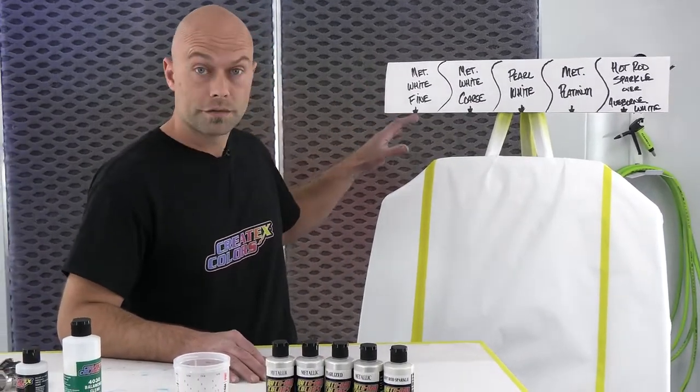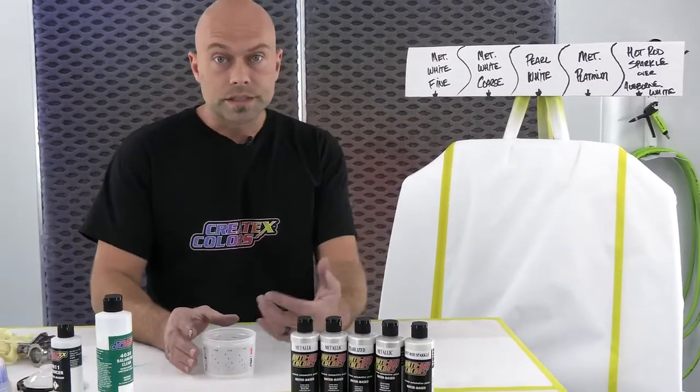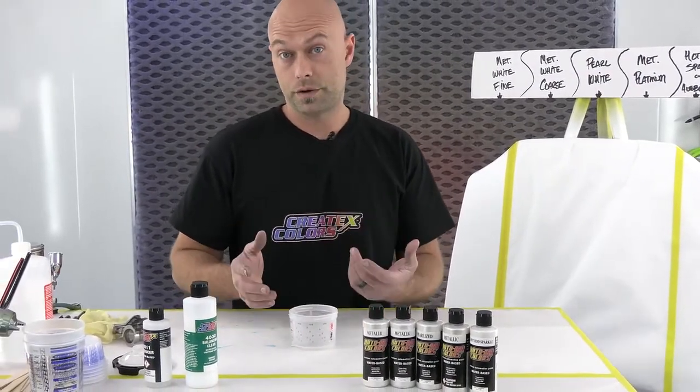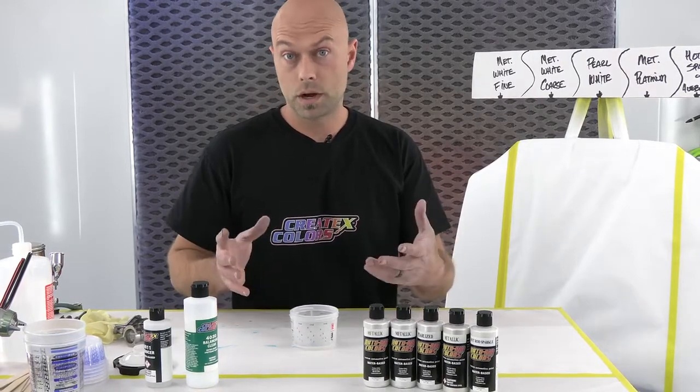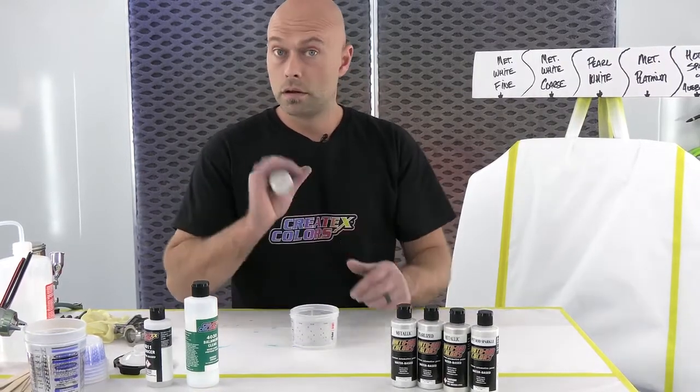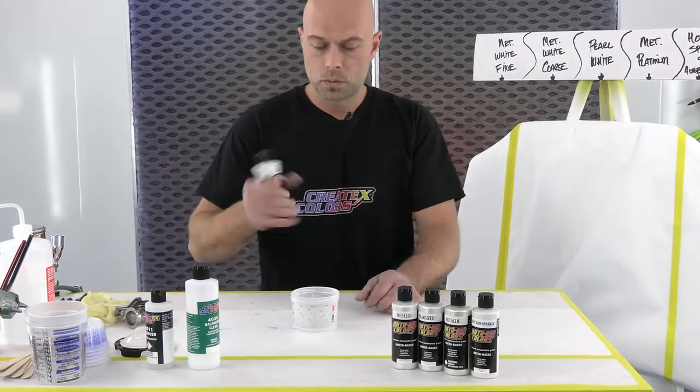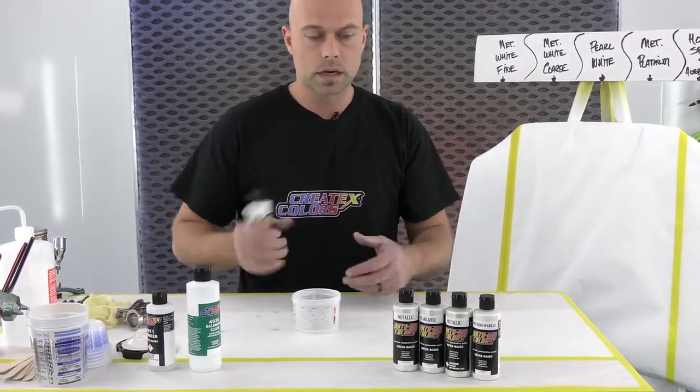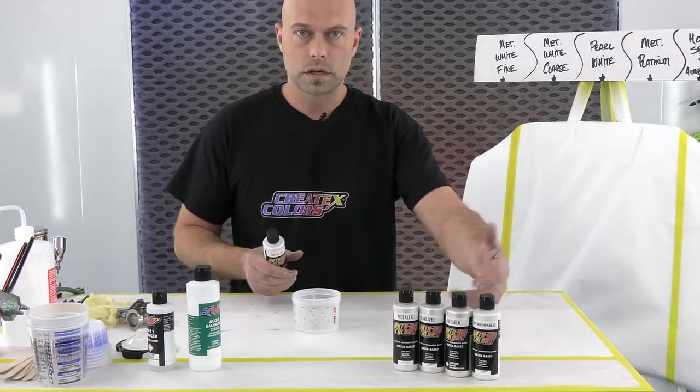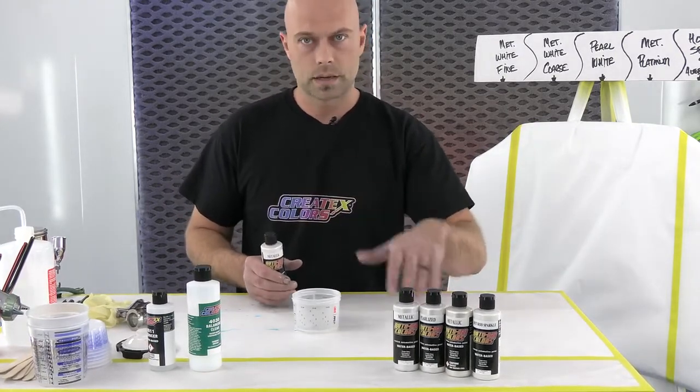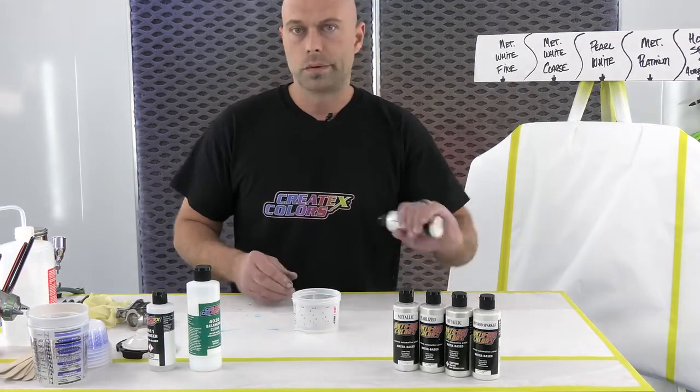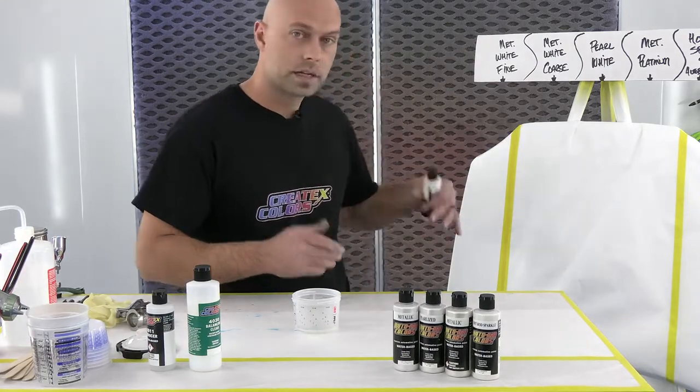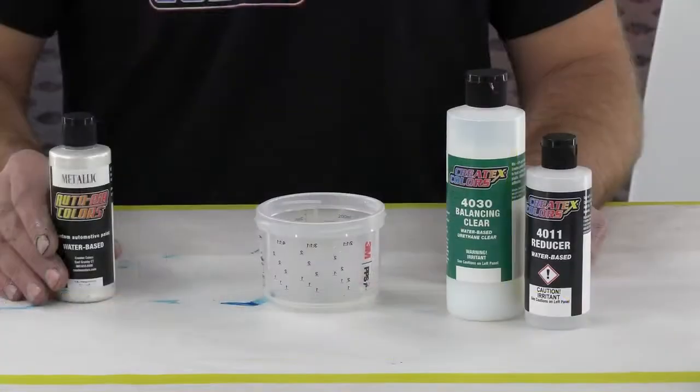So we'll start with the metallic white fine. These are all going to be mixed the exact same way. I like to go 25% 40-30 to the overall mix, so it's three to one. We'll get it in the cup and you guys can see what it looks like while I'm mixing it. We're not going to show me mixing every single one of these colors because the ratios are exactly the same.